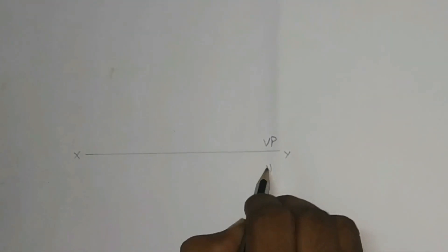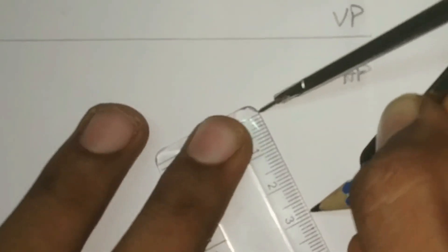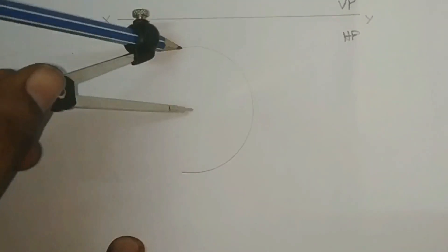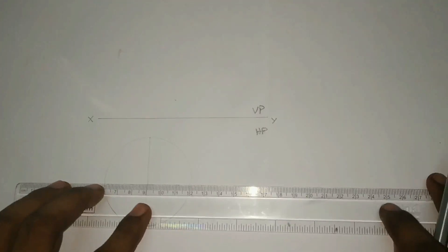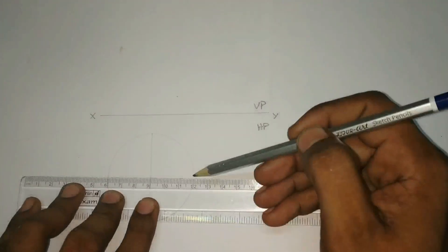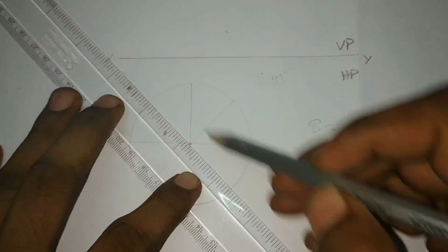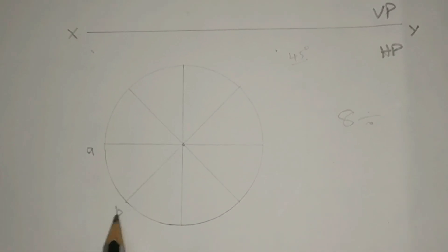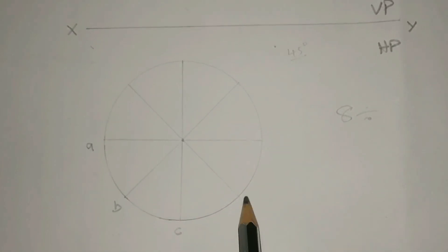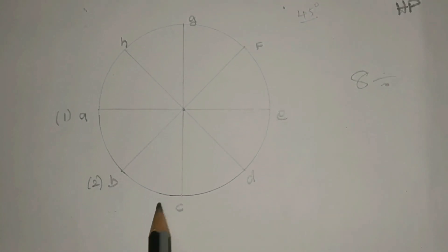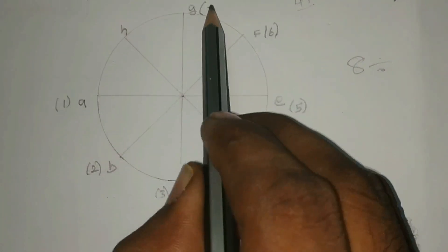Draw the XY line and mark the VP and HP. Use H-pencil in compass and measure a radius of 30 mm and draw the circle. Divide the circle into 8 equal pieces with the help of a protractor. For the top base I am giving alphabets A, B, C, D and for the bottom base I am giving numerals 1, 2, 3, 4.